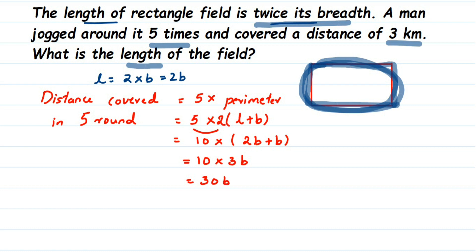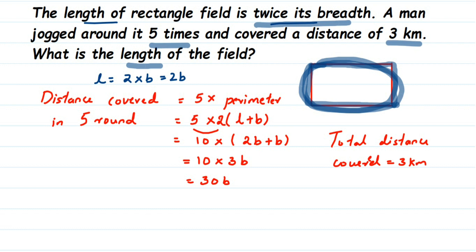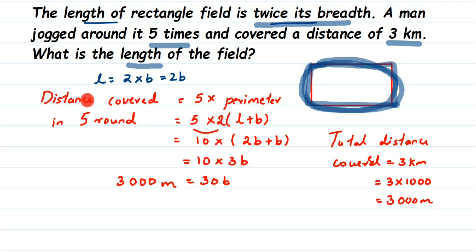In the question, the total distance covered in five rounds is three kilometers. We're going to convert everything into meters. Three kilometers equals three into one thousand, which is three thousand meters. So total distance covered is three thousand meters. Substituting in place of distance covered in five rounds, we get three thousand meters equals thirty b.